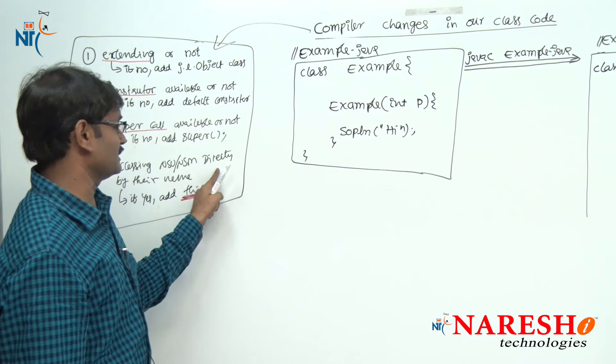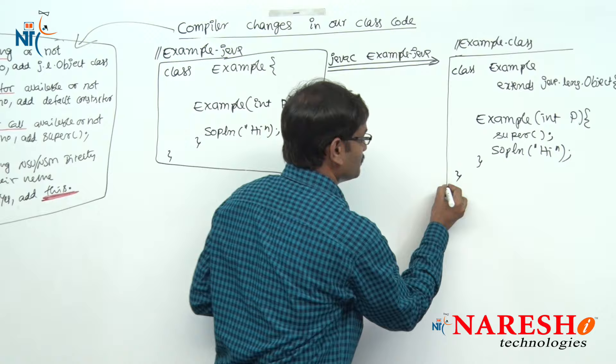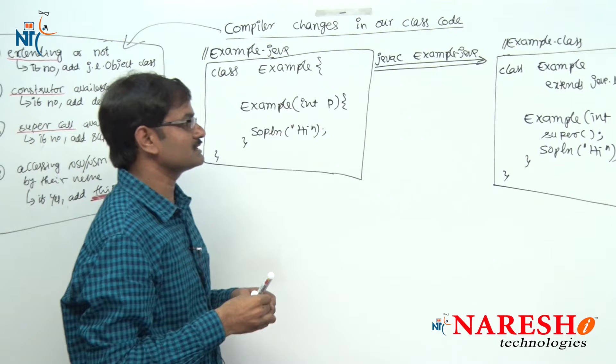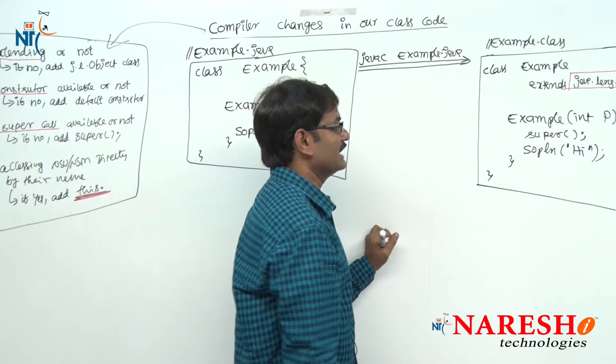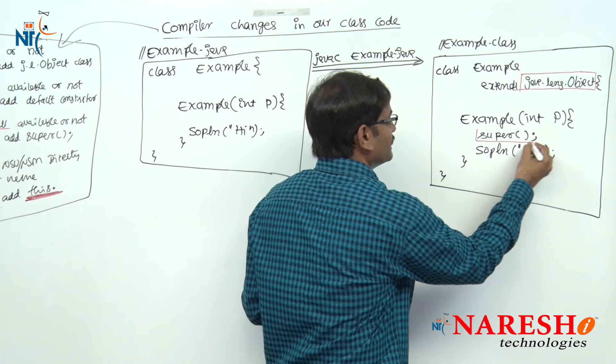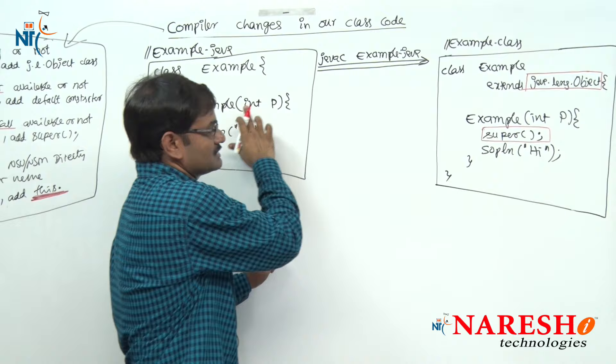Point four: accessing non-static variable or non-static methods? No. Compiler software completed its job. So the changes: our class is not a subclass of any class, so java.lang.Object is added. Constructor already available — not adding another constructor. But the constructor does not have super(), so compiler is placing super().